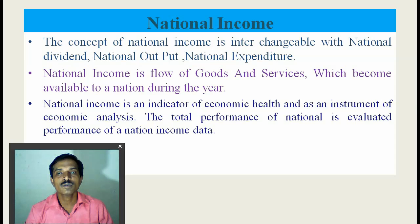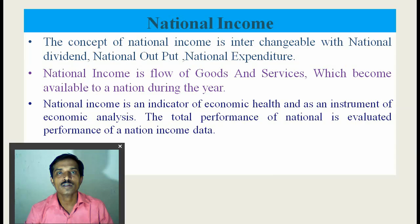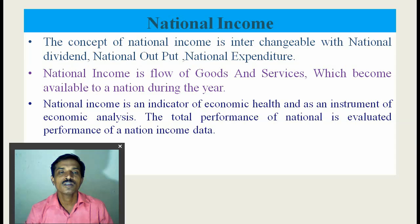These three concepts — national dividend, national output, and national expenditure — are interchangeable and used for one another. GNP is equal to Gross National Income (GNI), which also equals Gross National Expenditure. National income is the flow of goods and services which becomes available to a nation during the year. National income is an indicator of economic health and is an instrument of economic analysis. The total performance of a nation is evaluated through national income data.